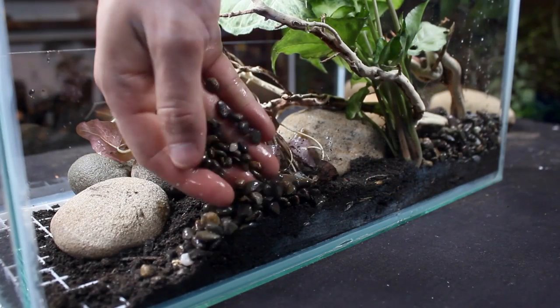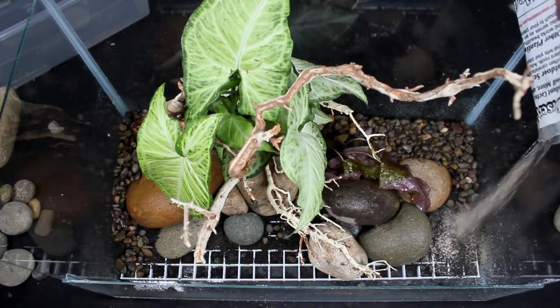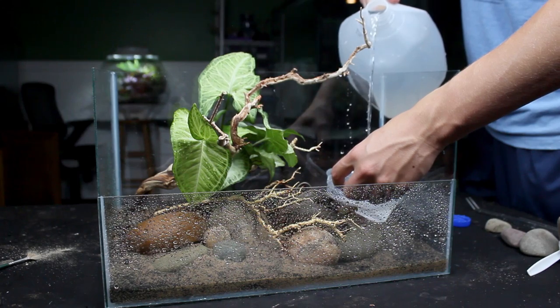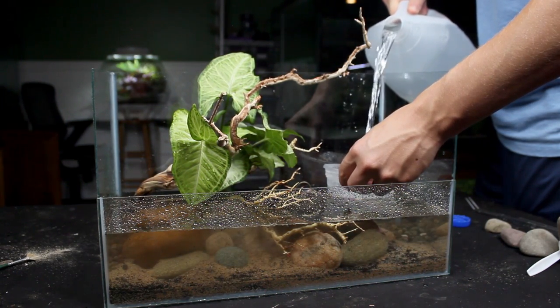After getting a good inch of soil down I capped everything off with pea pebbles. Then I transitioned into the front of the scape with some sand. At this point the tank is ready for water. In case you're wondering after modification the tank holds roughly two gallons of water.